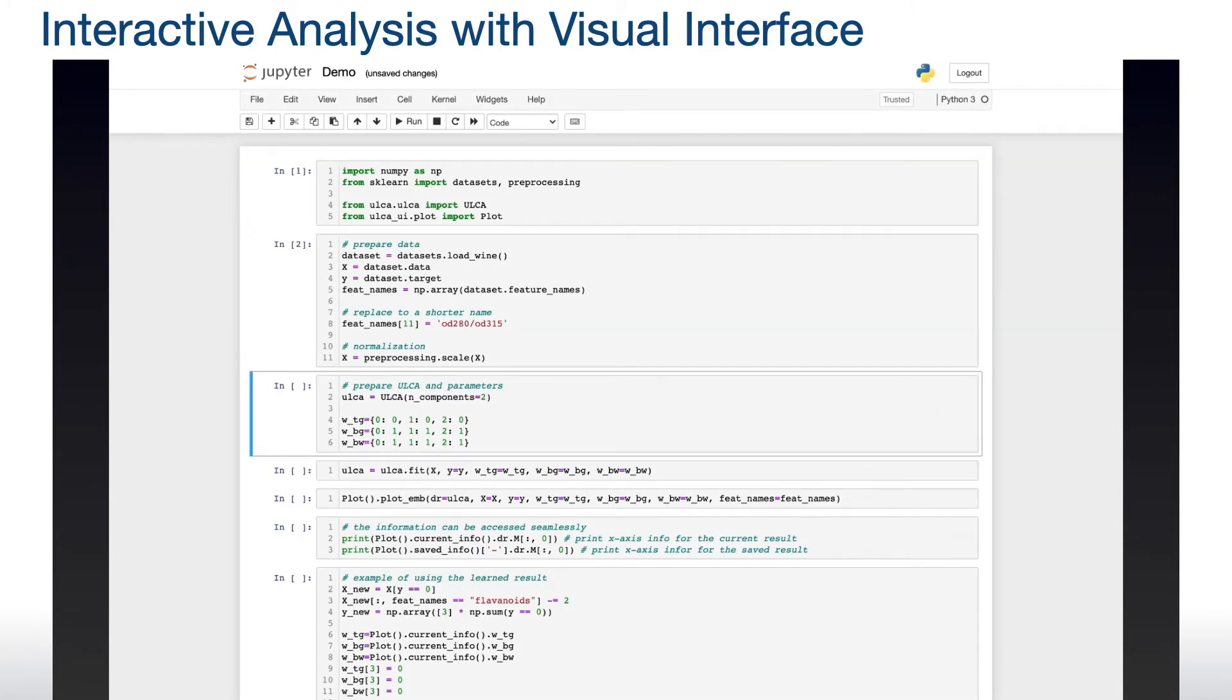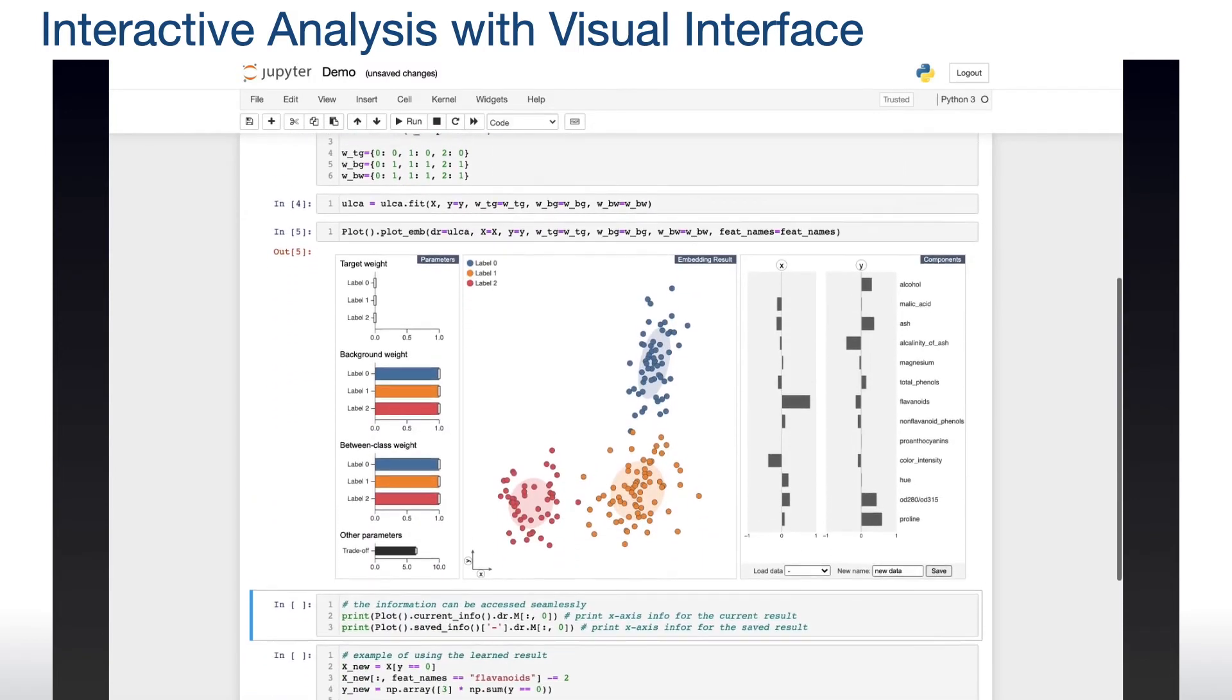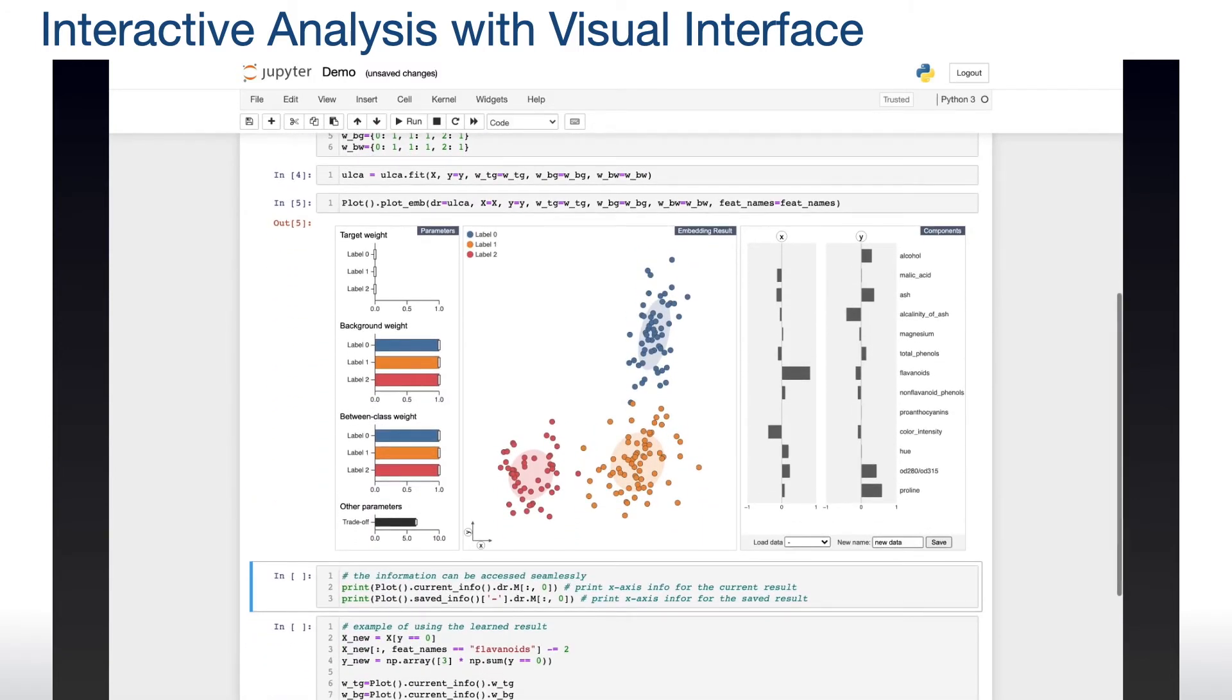We pre-process and apply ULCA to the data. Then, we visualize the result with the visual interface. The visual interface consists of three views. The left view shows the parameters used in ULCA. The middle depicts an embedding result with ULCA. And the right shows the original attribute's contribution to each embedding axis.